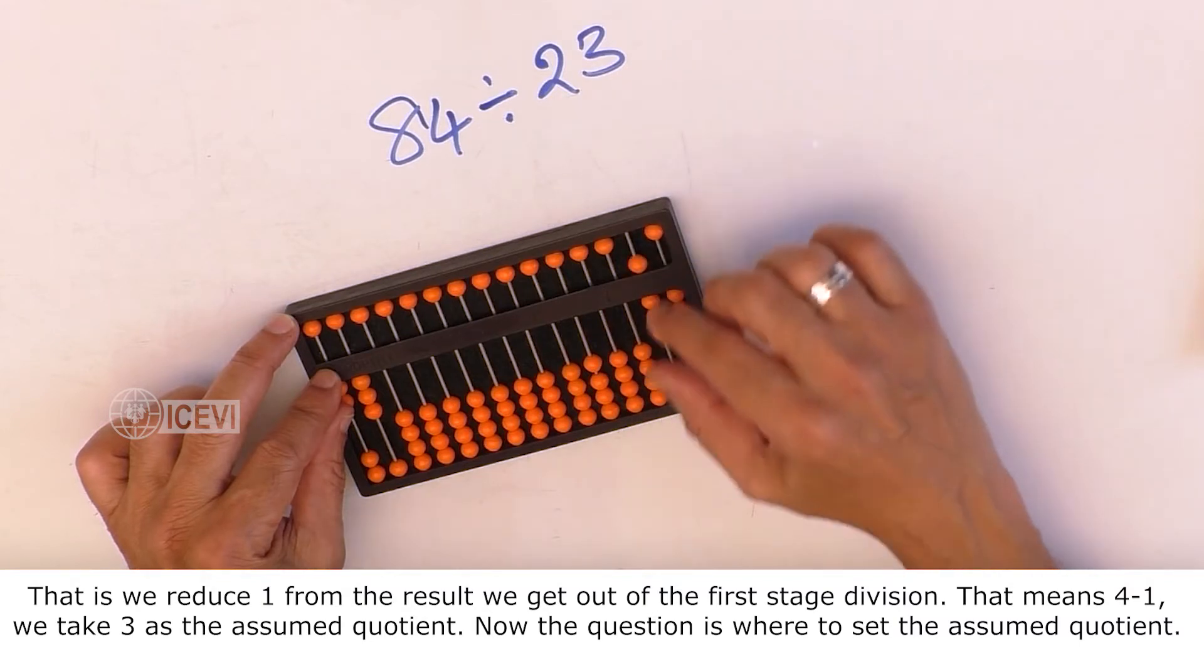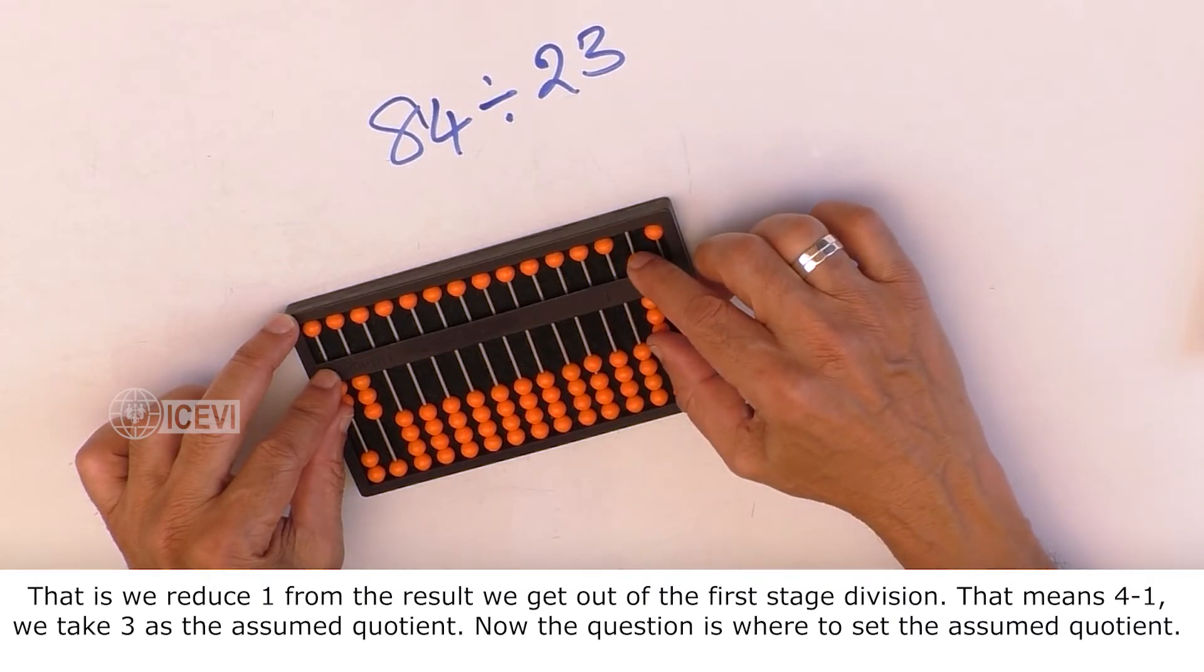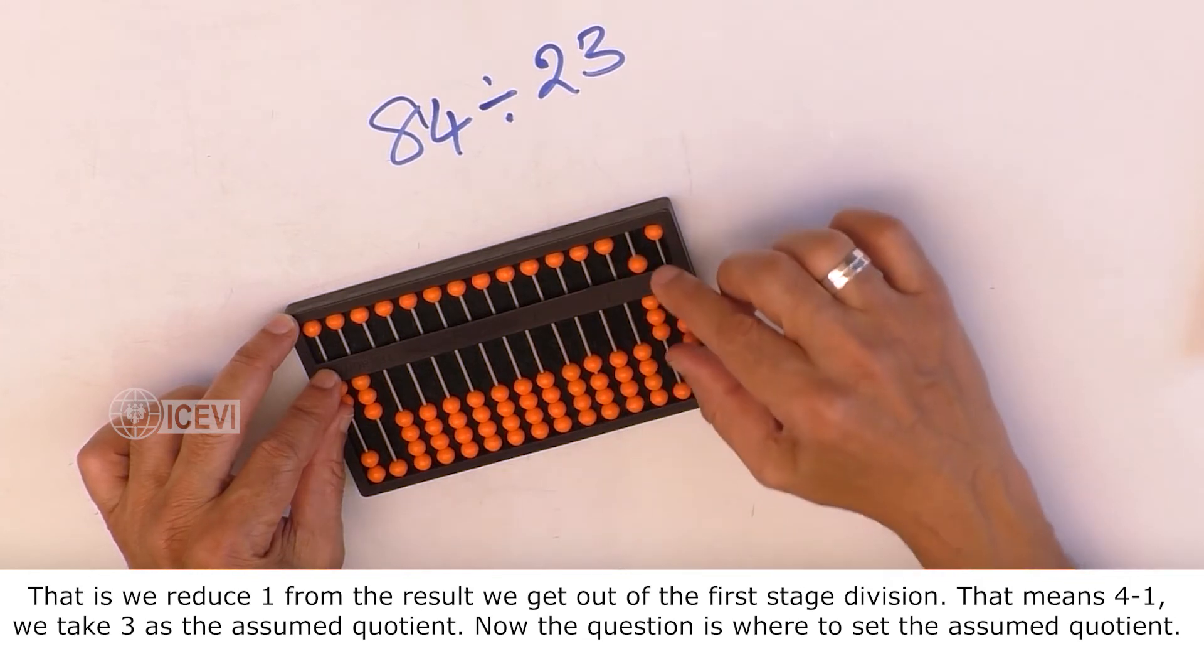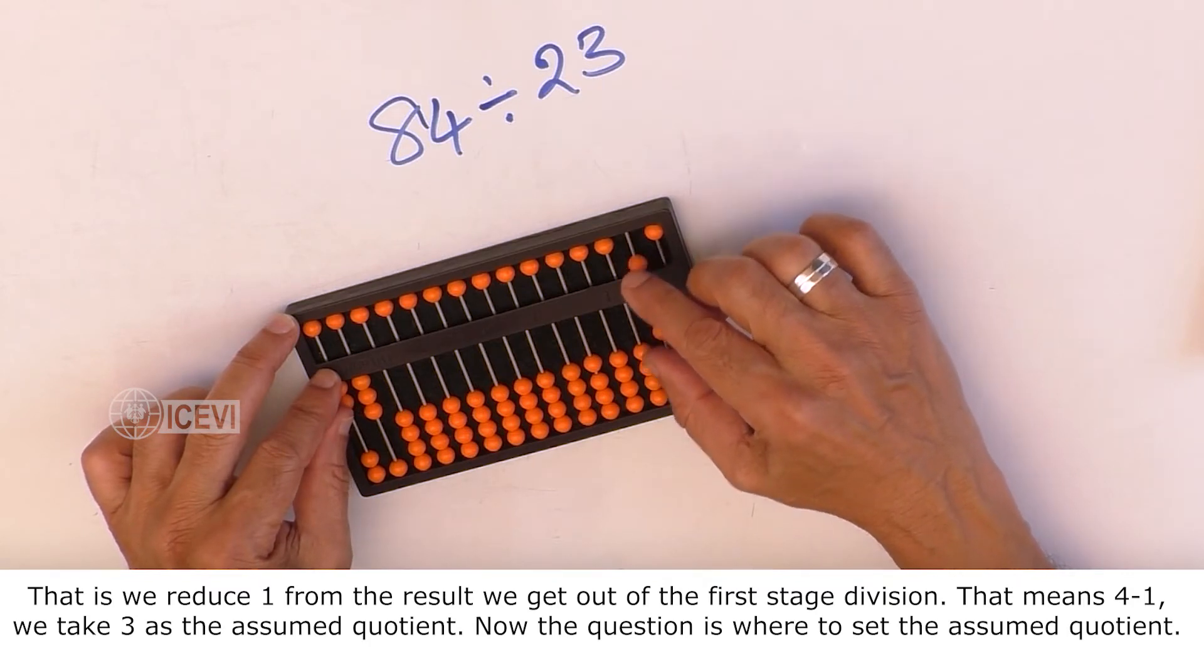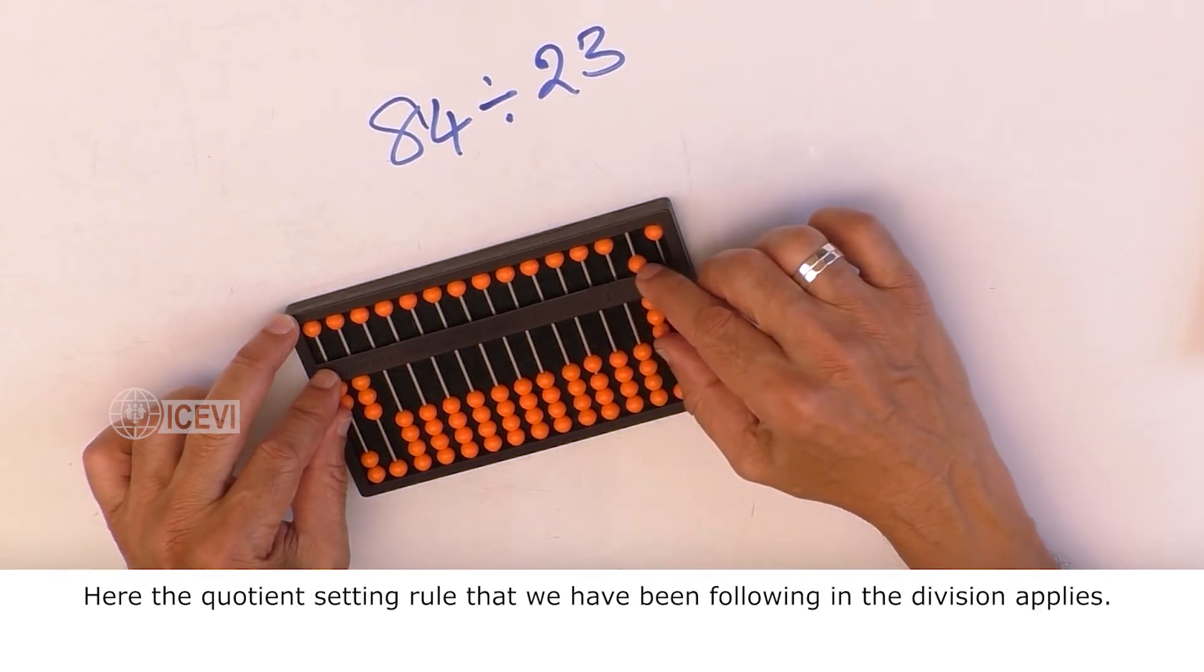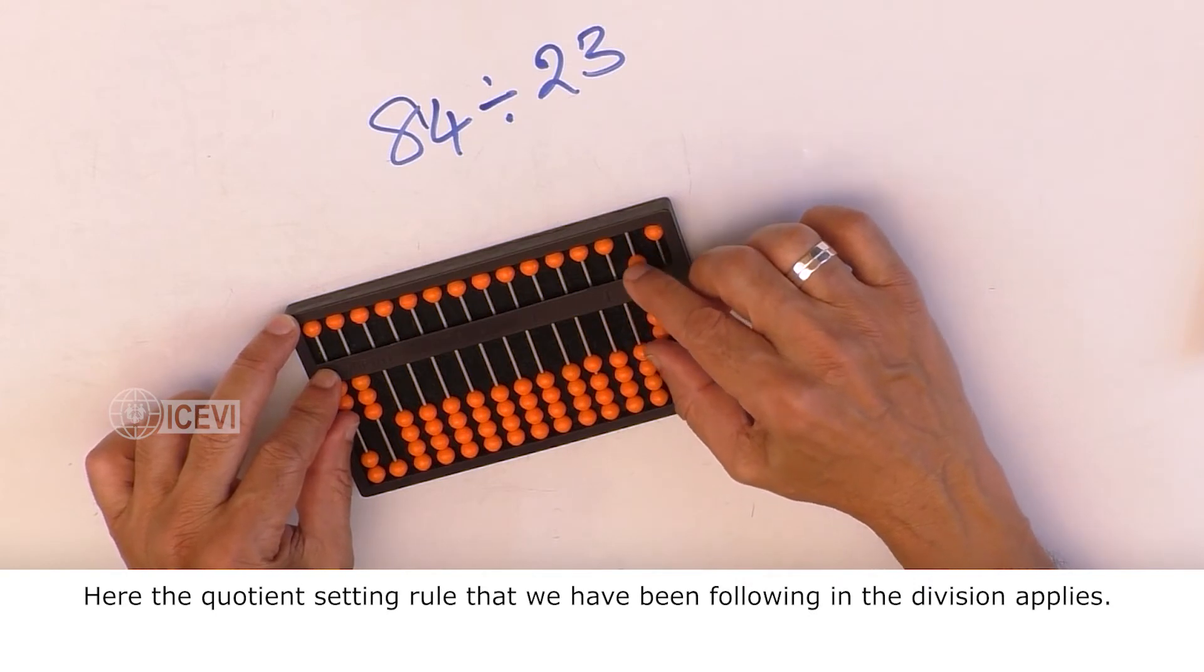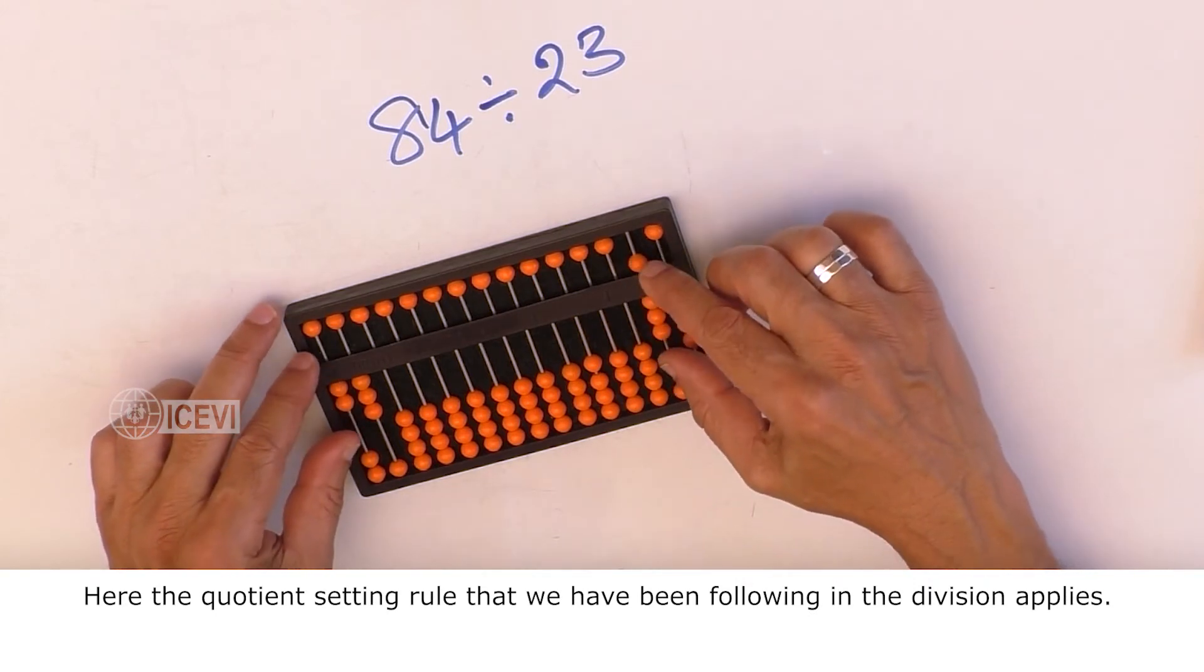That means 4 minus 1, we take 3 as the assumed quotient. Now the question is where to set the assumed quotient. Here the quotient setting rule that we have been following in the division applies.